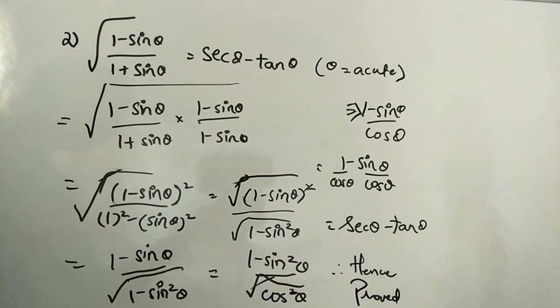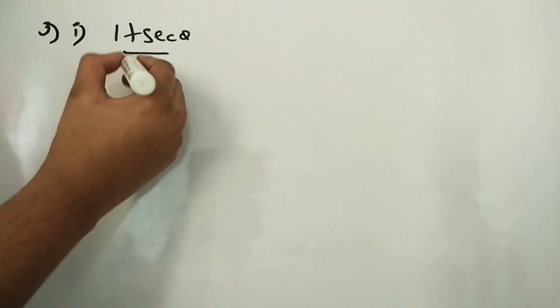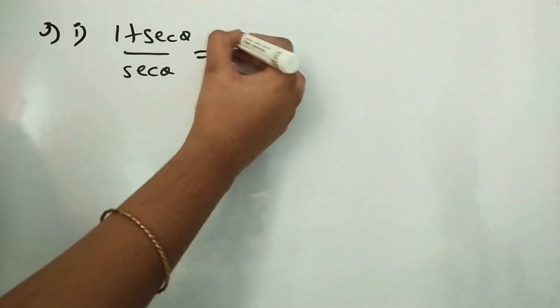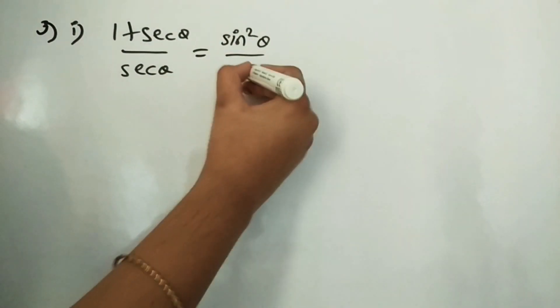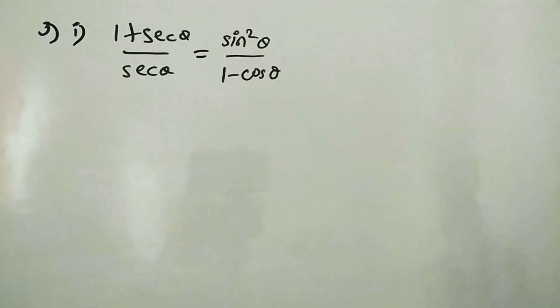Now the third question, which has two subdivisions. First, we will show that (1 + sec θ)/sec θ = sin²θ/(1 − cos θ).